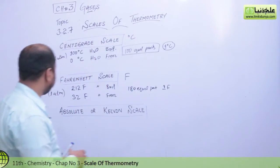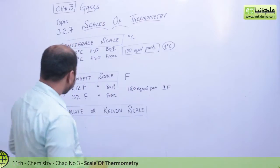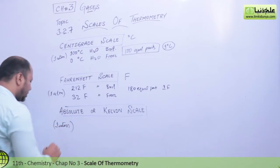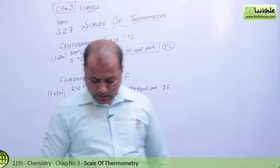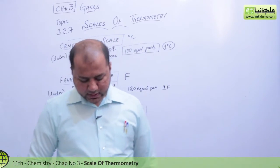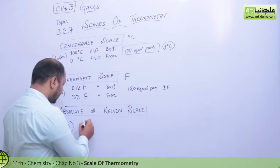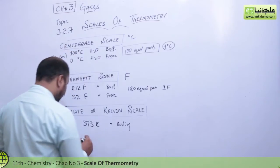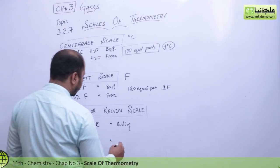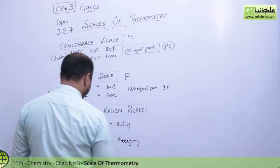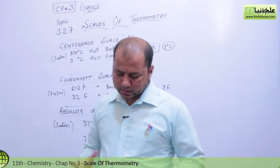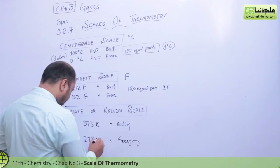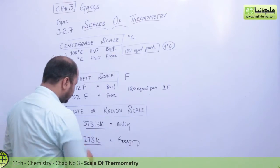Let's talk about the absolute or Kelvin scale. Kelvin was a genius scientist. At 1 atmosphere pressure, 273 Kelvin equals 0 degrees Celsius. Water boils at 373 Kelvin, though more precisely it boils at 373.16 Kelvin. So 373 Kelvin is the boiling point and 273 Kelvin is the freezing point of water.